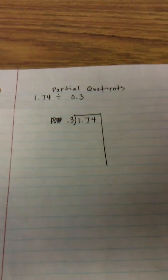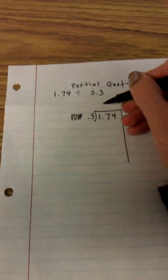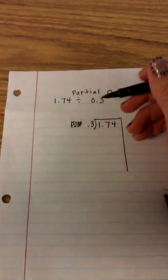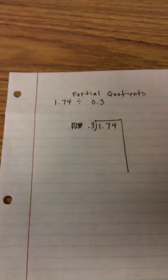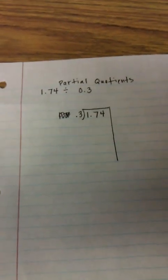You'll remember partial quotients from back when we used it for dividing whole numbers. It's very similar for dividing decimals, and the nice thing about it is that you don't have to know exactly how many times your divisor goes into your dividend. It allows you to guess and check, which is another name for this strategy.